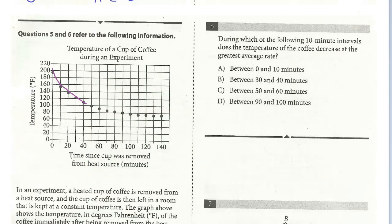Number 6 also deals with the same information. During which of the following 10-minute intervals does the temperature of the coffee decrease at the greatest average rate? Just from reading the graph initially, we know this intuitively. It was almost 200 when first removed and drops to about 150 in the first 10 minutes, then it's more of a tapered effect. So it's going to be between zero and 10 — A is the answer.